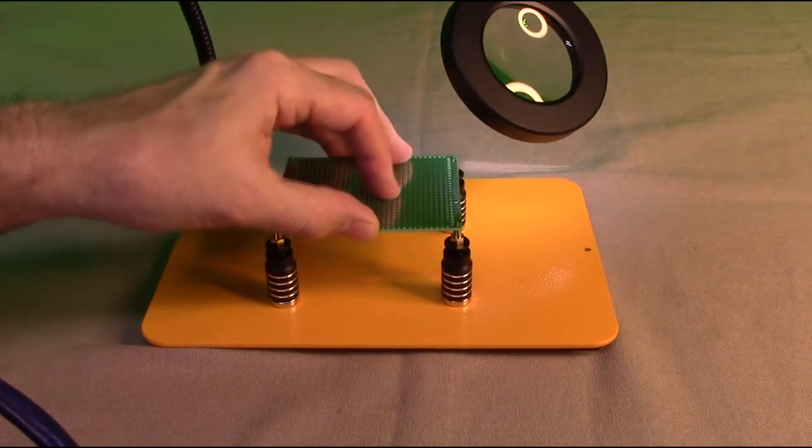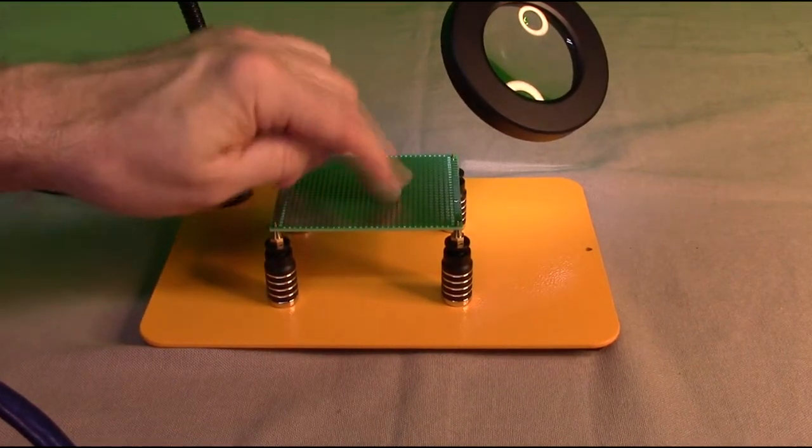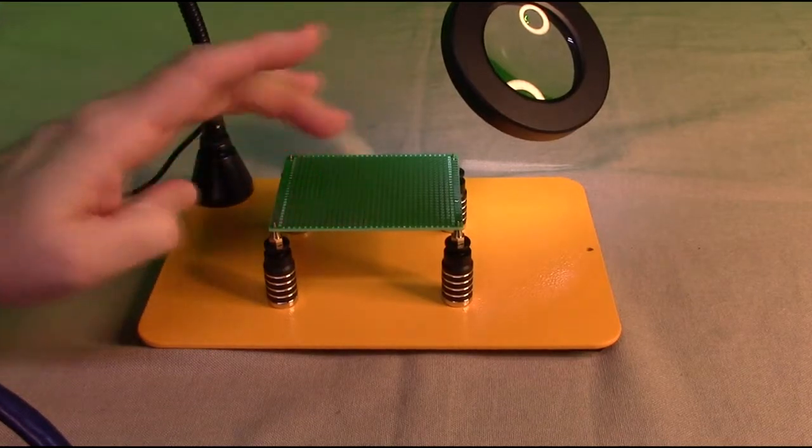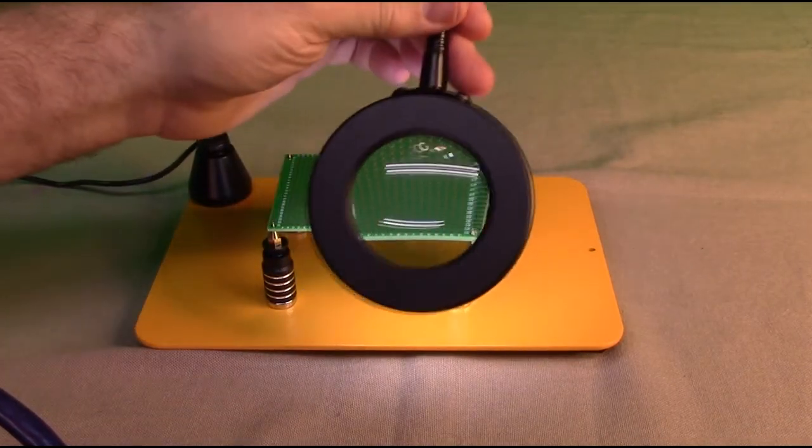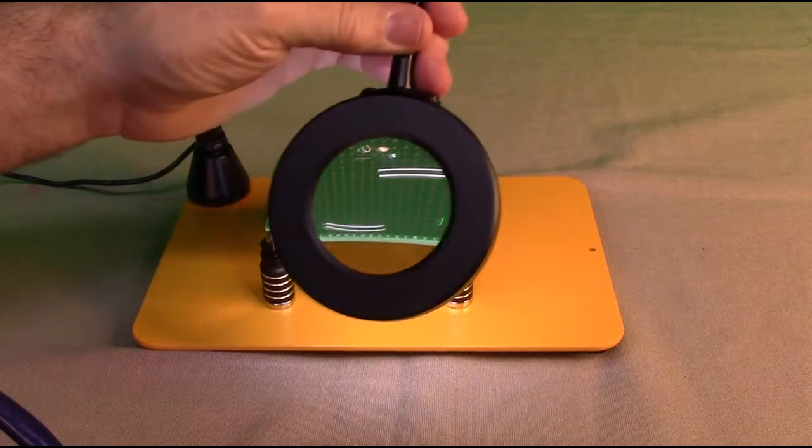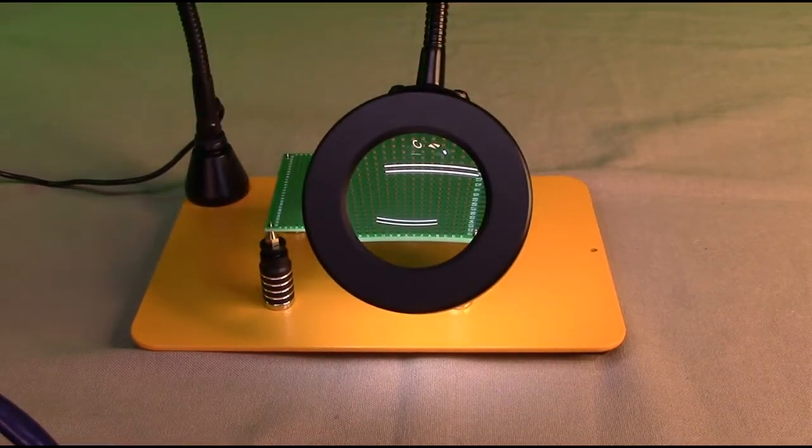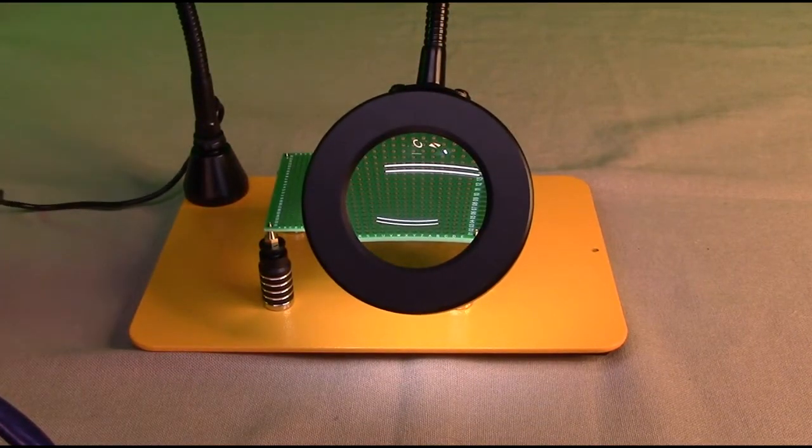This is really on there so that you can easily solder your components. You just swing the light across, and you can then see them close up. Of course, you can always adjust the brightness depending on the application.